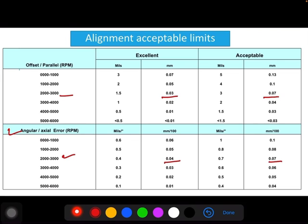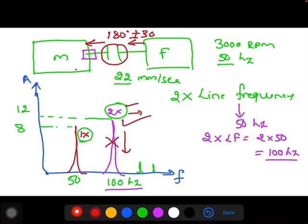Once you've done the proper alignment, again you need to measure the vibration at this location. Here, 2x disappears from the spectrum. You will get only 1x, it may be 8 mm per second.